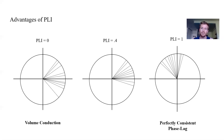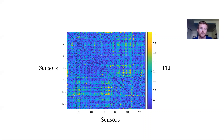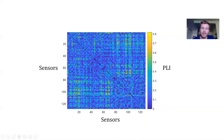Once we compute PLI between every pair of sensors at every time point and for each frequency band, we're left with an adjacency matrix at each time point. This matrix shows each sensor's connectivity with every other sensor as PLI values — for example, a value of 0.8 indicates high consistency, while zero indicates none. Because connectivity between two sensors is undirected, the matrix is symmetrical: the PLI between channel 10 and channel 20 equals the PLI between channel 20 and channel 10.